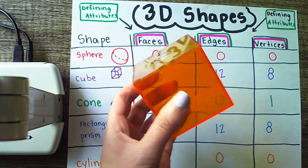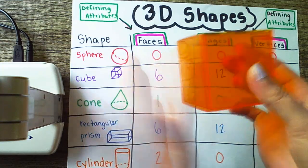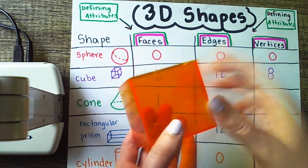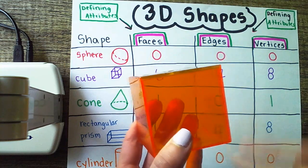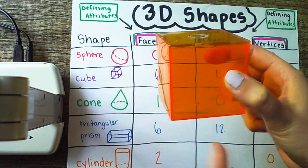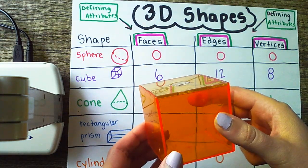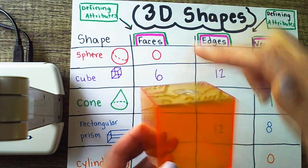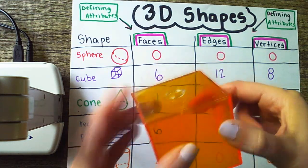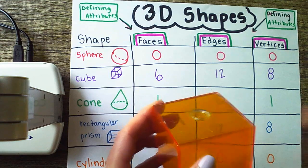And you can go around and show mom its six faces. One, two, three, four, five, six, 12 edges. One, two, three, four, five, six, seven, eight. I didn't do all 12. Sorry, lost track. One, two, three, four, five, six, seven, eight, nine, 10, 11, 12, and eight vertices. Those are the corners. One, two, three, four, five, six, seven, eight.